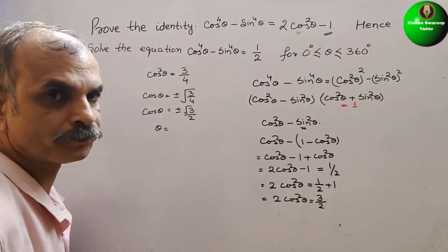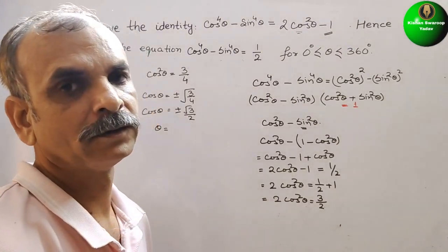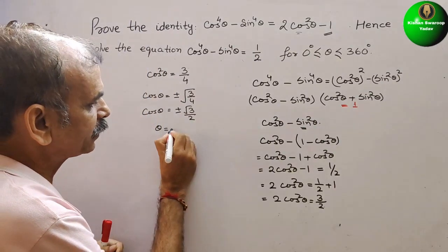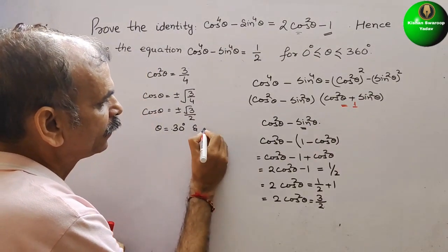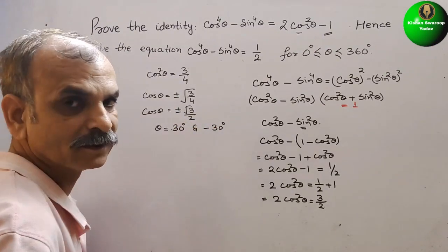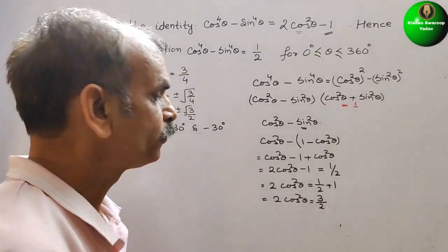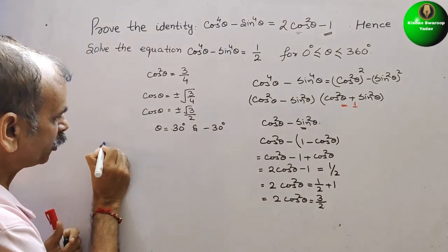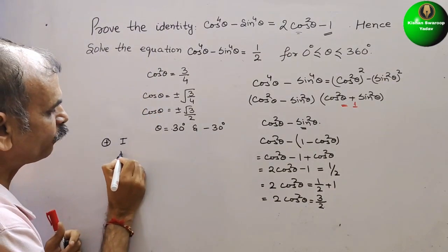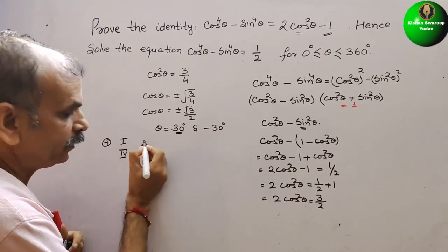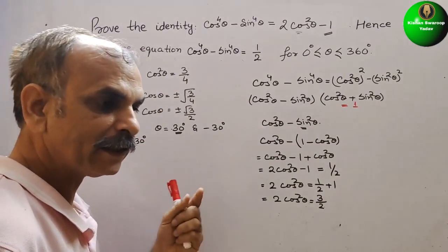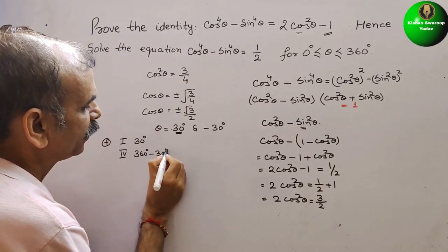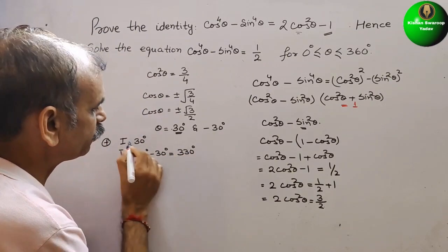So what is theta? Root 3 by 2 corresponds to 30 degrees. For the positive case, we get solutions in the 1st and 4th quadrants. In the 1st quadrant, theta is 30 degrees. In the 4th quadrant, it is 360 degrees minus 30 degrees, which equals 330 degrees.